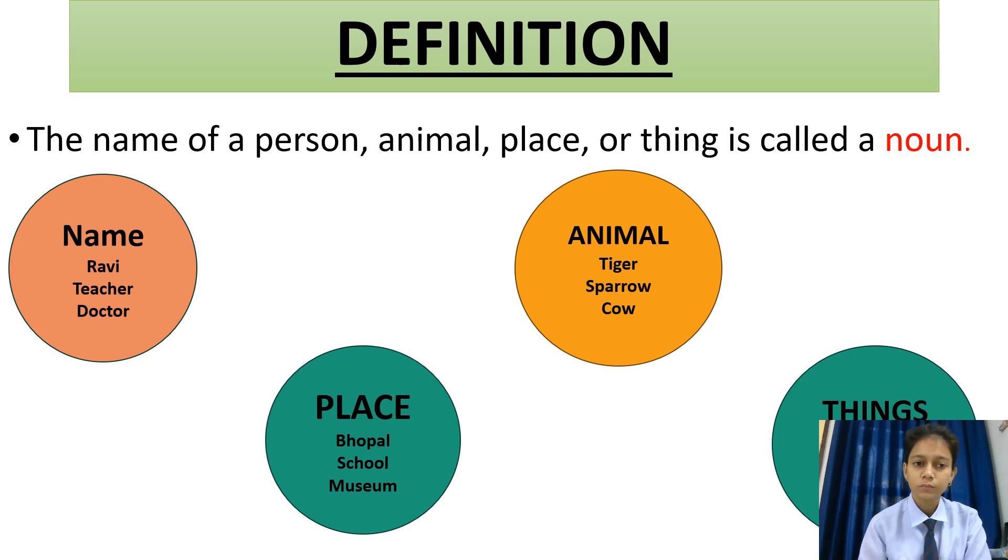The definition of a noun is very simple. The name of a person, animal, place or thing is called a noun. Example of a name: Ravi, teacher, doctor. In name, we can mention the profession of a person. Place: Bhopal, school, museum. Example of an animal: tiger, cow, sparrow. And things like bucket, pencil, pan, milk, anything.